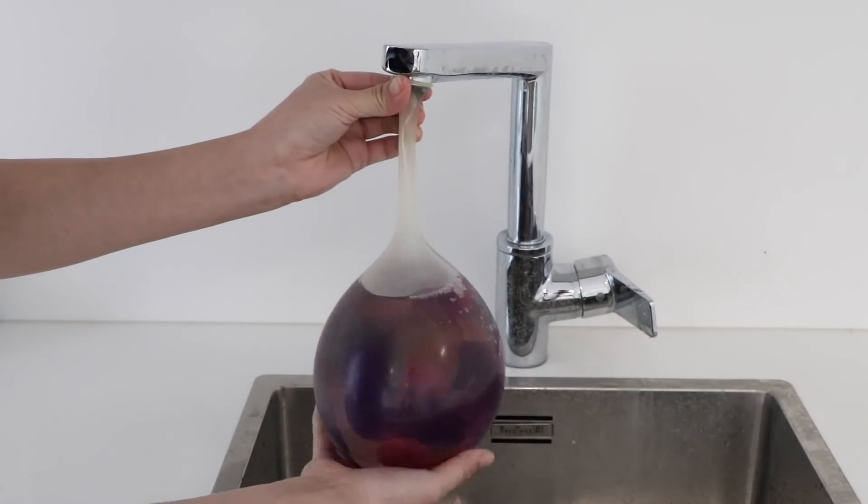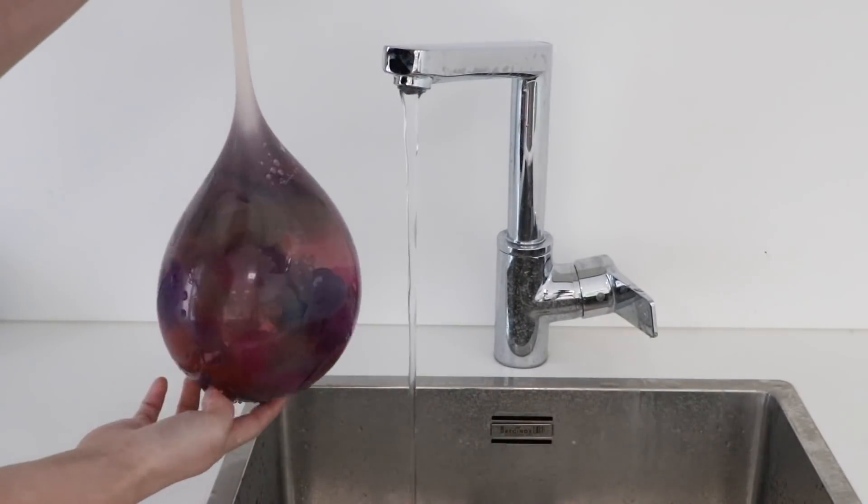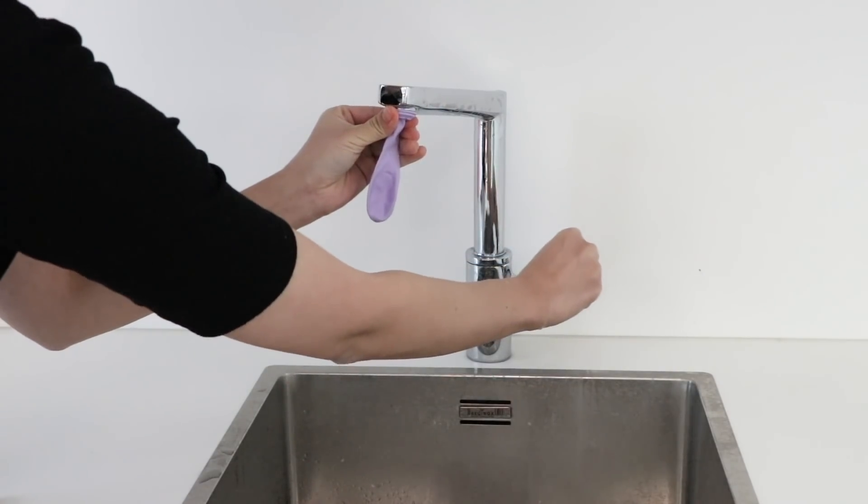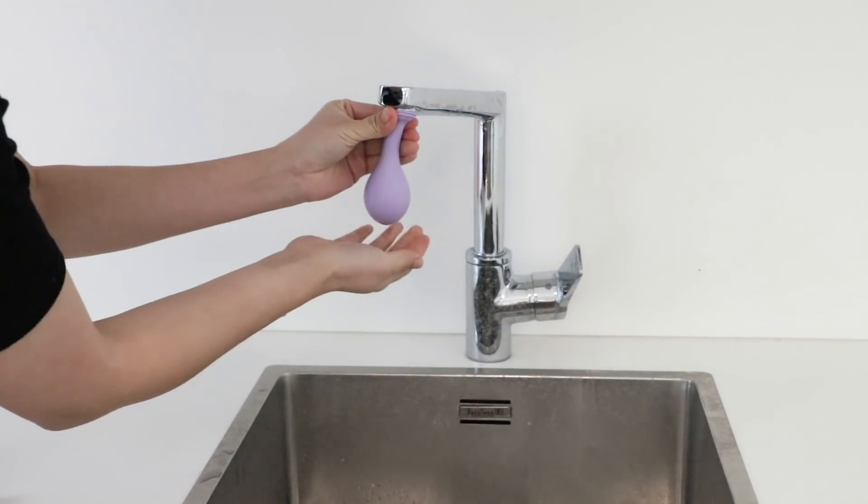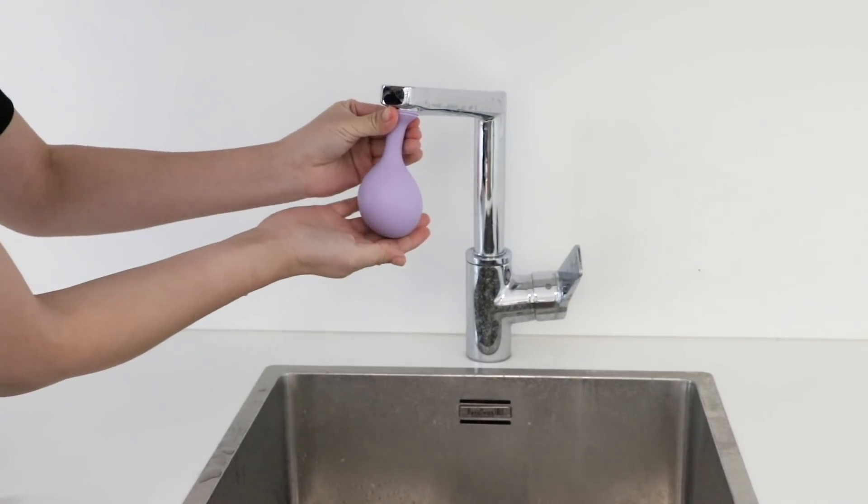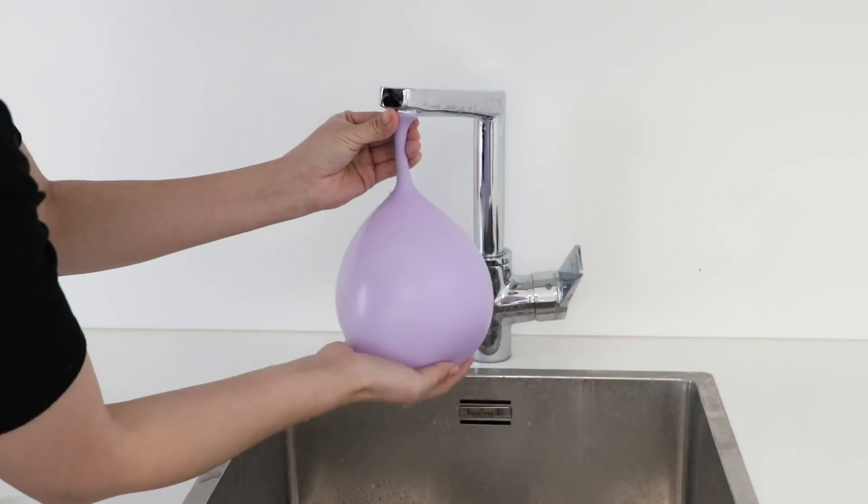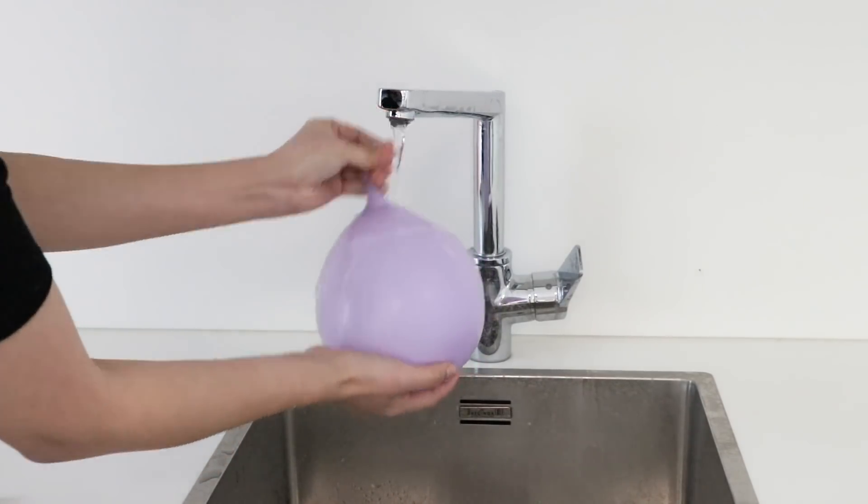A useful tip is to run your tap very slowly when filling up your balloon. This takes a bit longer but it really helps to reduce the water splashing when you take it off.